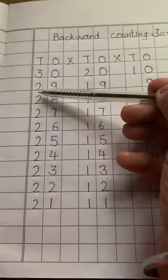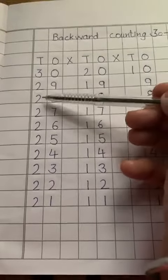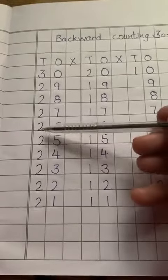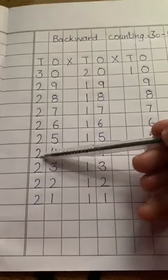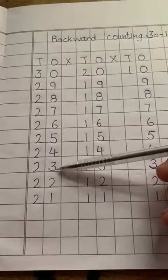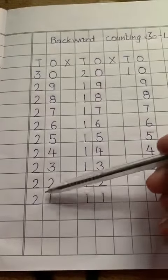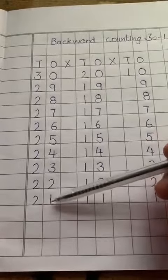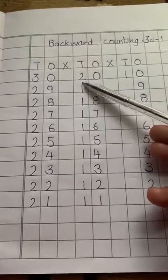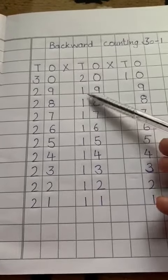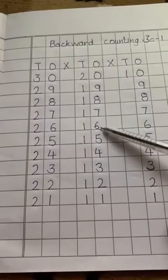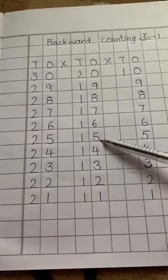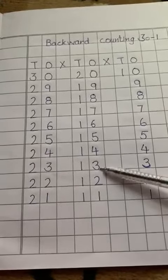29, 28, 27, 26, 25, 24, 23, 22, 21, then 20. 19, 18, 17, 16, 15, 14, 13.